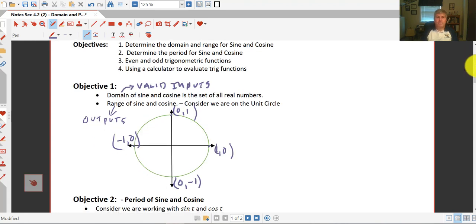The first objective, take a look at the domain of sine and cosine. Well domain remember is our valid inputs, what can we input for x, or in this case what can we input for our angle, and that is that it's going to be the set of all real numbers. We can input any angle, any measure of angle that we want.